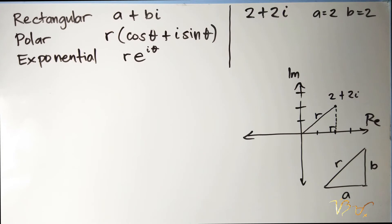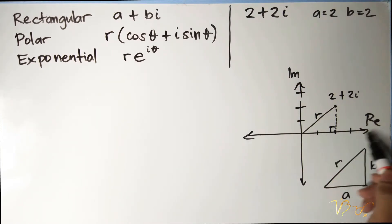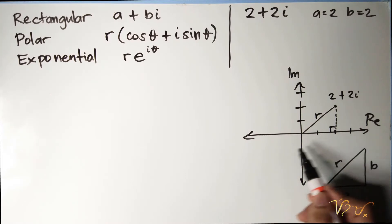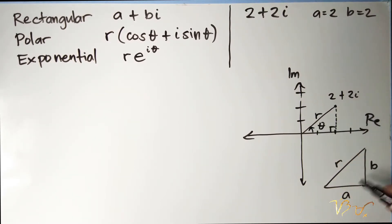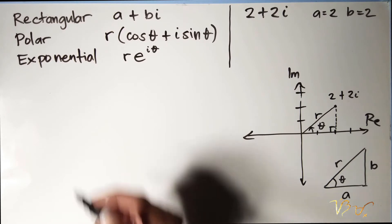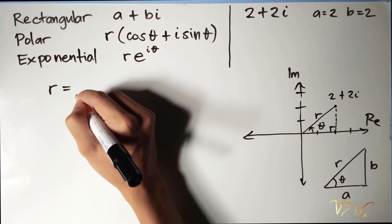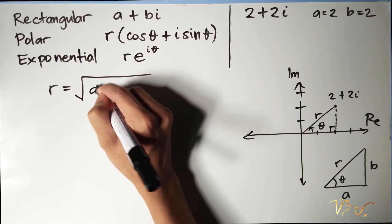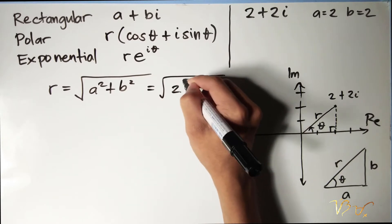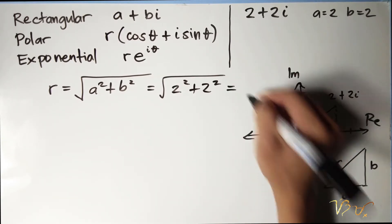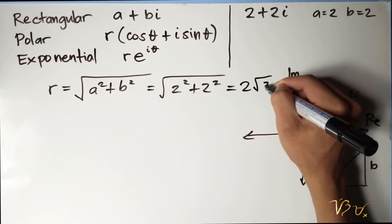We will also need the value of theta, and that theta should always be taken from the positive real axis. To solve for the value of r or the modulus, we will be using the Pythagorean theorem: r is equal to the square root of a squared plus b squared. That is equal to the square root of 2 squared plus 2 squared, which equals 2 square root of 2.